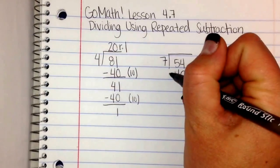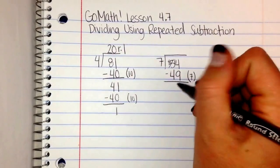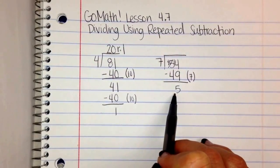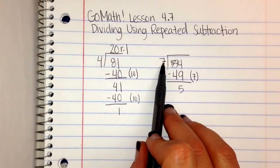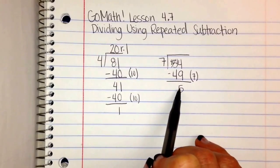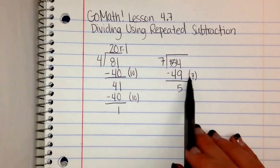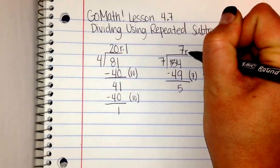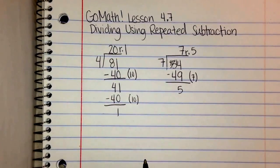My next step is to subtract. I borrow from the 5, giving me 14. I know 14 minus 9 is 5, and 4 minus 4 is 0, so I'm left with 5. I look at this — since 5 is smaller than 7, I can't go any further, because 7 times 1 is 7 and that's the smallest multiple, and I can't do 5 take away 7. So I look in the parentheses for my quotient: my quotient is 7 and my remainder is 5. And that's how you do division using repeated subtraction.